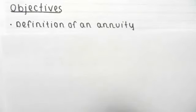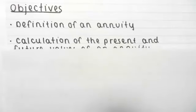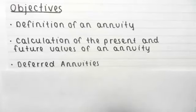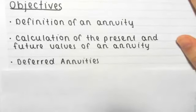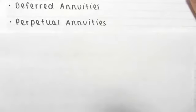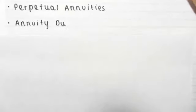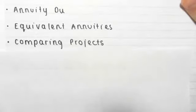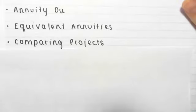This is part two of the annuity series. In part one we covered the definition of an annuity, how to calculate present and future values, and what to do with a deferred annuity. In this part we'll be looking at perpetual annuities and annuity due, and in part three we'll look at equivalent annuities and how to use annuities to compare projects.